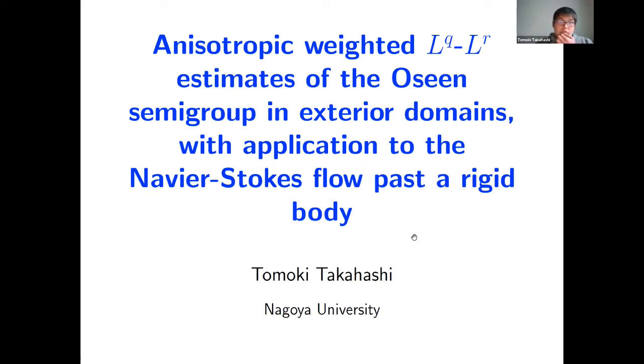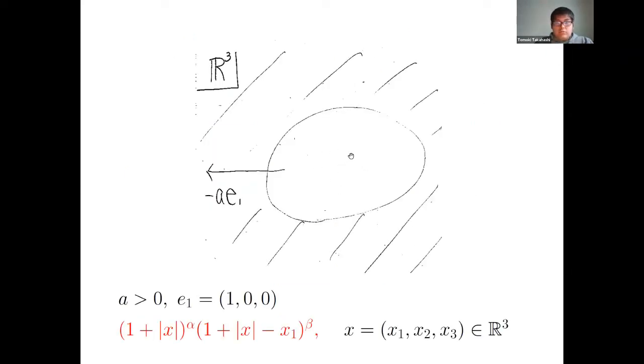Today, I talk about the Navier-Stokes flow past a rigid body. Assume that a rigid body translates with a prescribed velocity minus a e1. Here, a is positive and e1 is a unit vector in the x1 direction. Assume that the fluid occupies the outside of the rigid body. By taking a frame attached to the body, the fluid motion obeys the Navier-Stokes System in a fixed exterior domain.